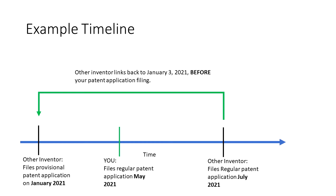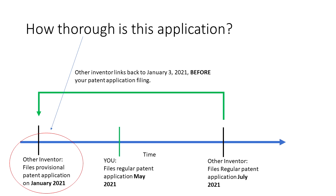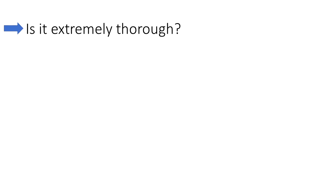Now an important thing to remember is that a provisional patent application is not always equivalent to the regular patent application that connects with it. A provisional patent application is only as good as its contents, which raises the question: how thorough is this provisional patent application? Is it scribble on a cocktail napkin? Then it might not support the rejections and you might have a chance to overcome that rejection. The provisional application could be quite thorough — it varies and all depends on the circumstances and who filed that application.